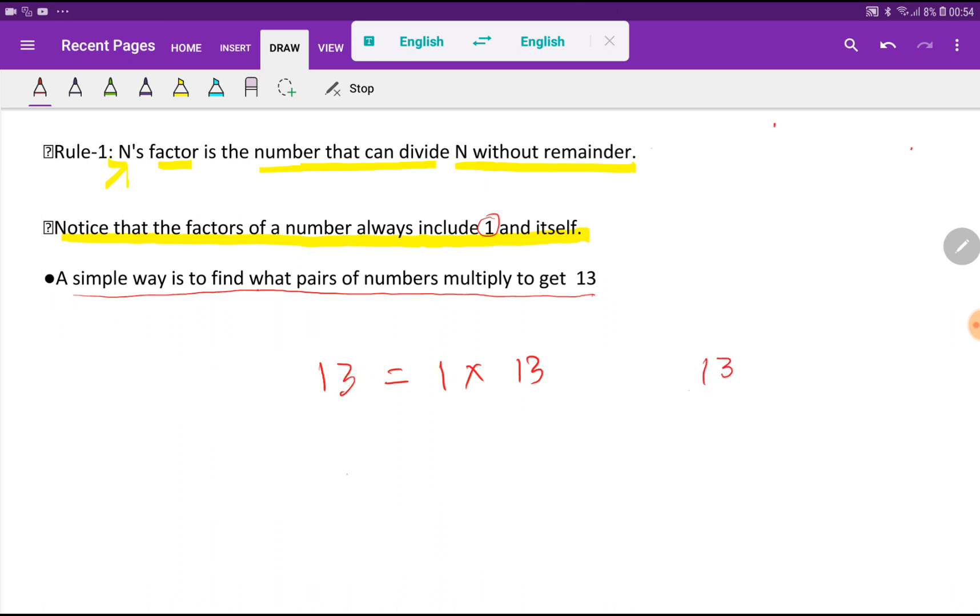So 1 and 13 are the factors of 13. If you divide 13 by 1, the result will be 13. And if you divide 13 by 13, the result will be 1.